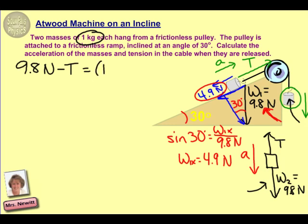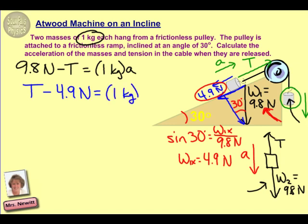We're now ready to write our equations. For object 2, assuming it moves downward, its weight must exceed tension, so: 9.8 − T = 1 × a. That's our first equation. For object 1 on the ramp, tension pulls it up the ramp and is larger, so: T − 4.9 = 1 × a. Be careful to use only the component of weight acting along the ramp, which is 4.9 newtons, not the full weight.